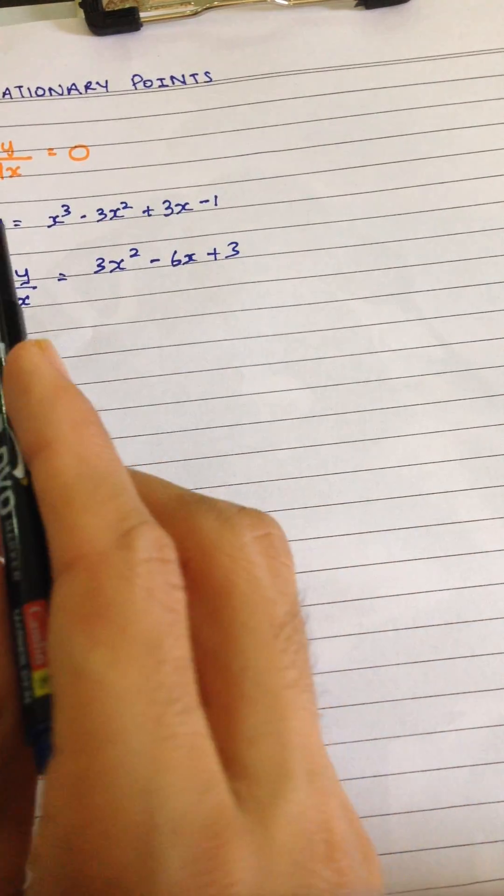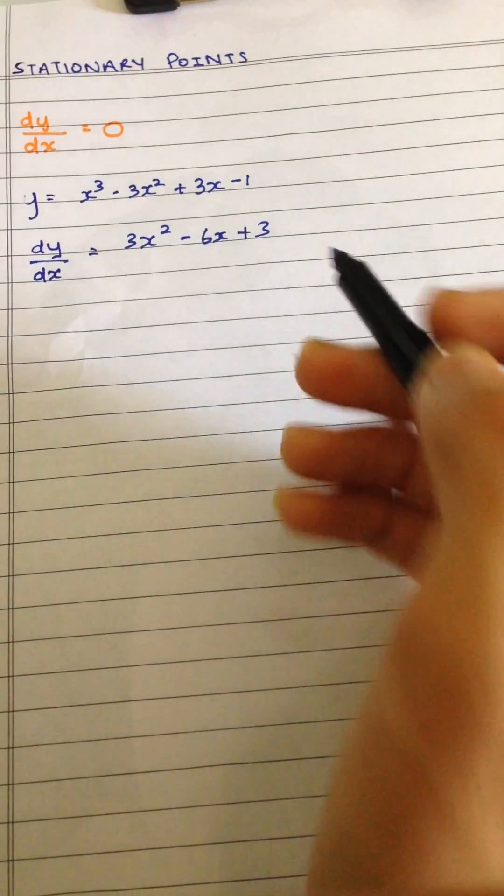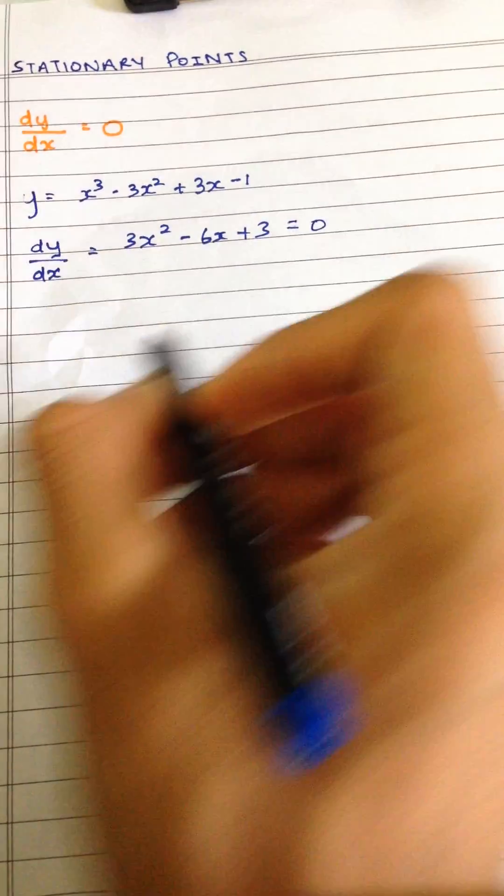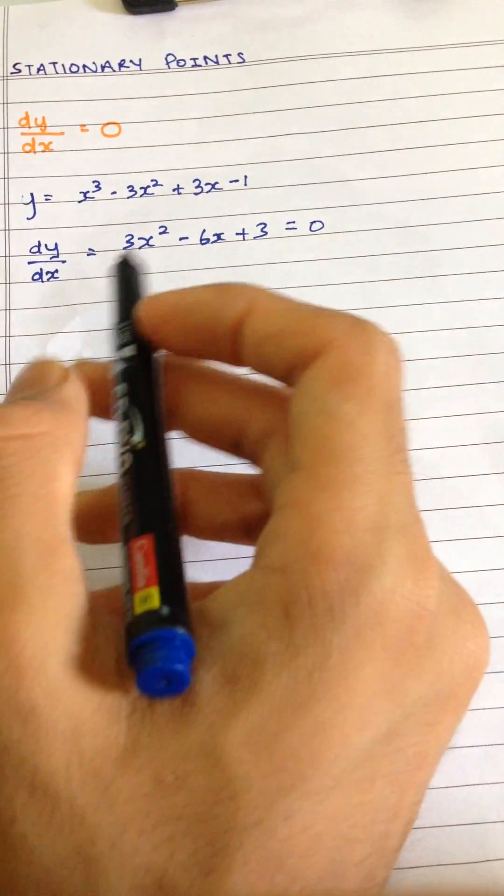So as the condition says, we have to equate it to zero, so this is equal to zero. So as you can see now, this is a quadratic equation.